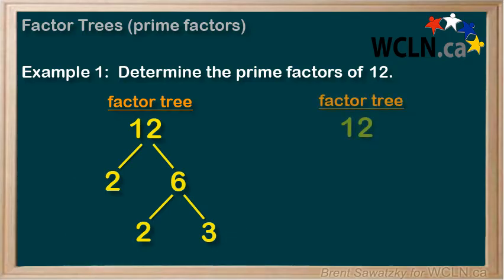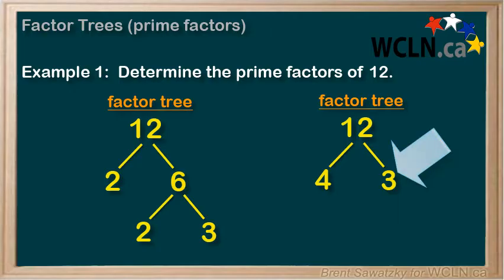So what if we had started by breaking the 12 down into 4 and 3? In this case, the 3 is a prime, so we're done with that branch, and we can break the 4 down into 2 and 2.